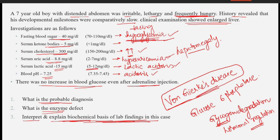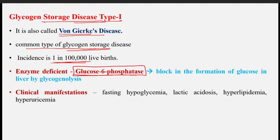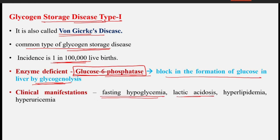This is a glycogen storage disease type 1, Von Gierke's disease, and is the most common type of glycogen storage disorder. The incidence is 1 in 1 lakh live births. As we have seen, the enzyme that is deficient is glucose-6-phosphatase. There is a block in the formation of glucose in the liver by glycogenolysis — especially during the glycogen degradation pathway the formation of glucose is inhibited. Clinical manifestations include fasting hypoglycemia, lactic acidosis, hyperlipidemia, and hyperuricemia.